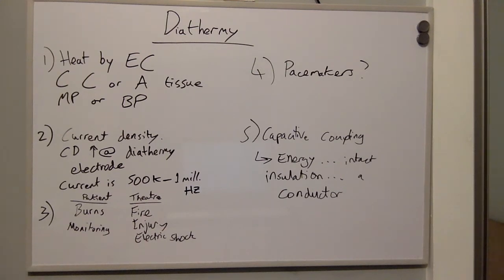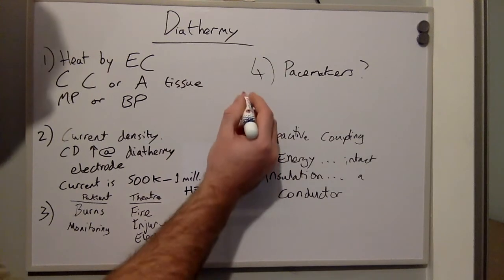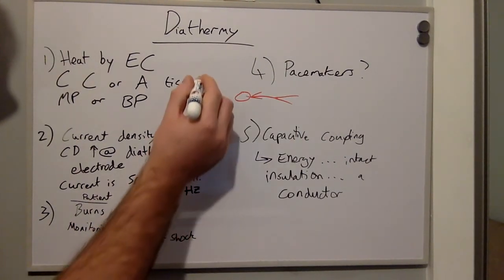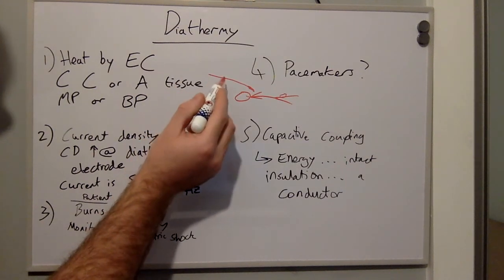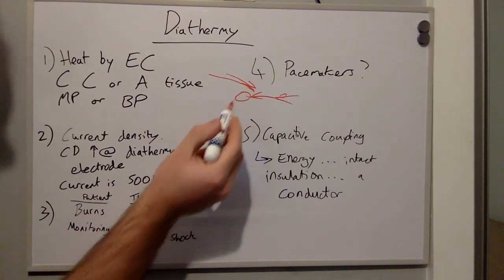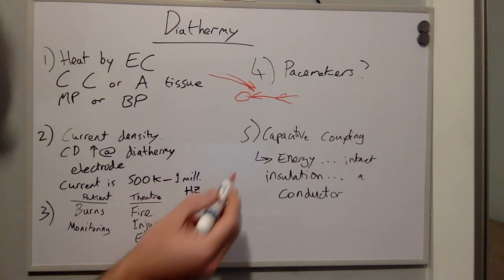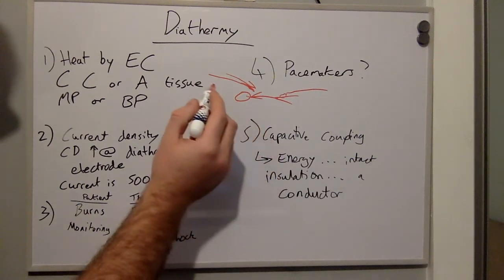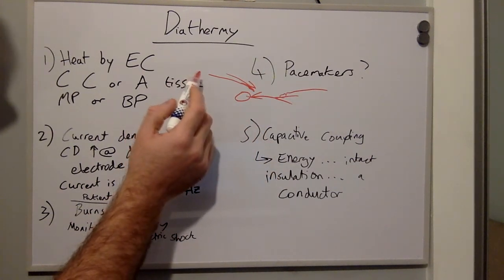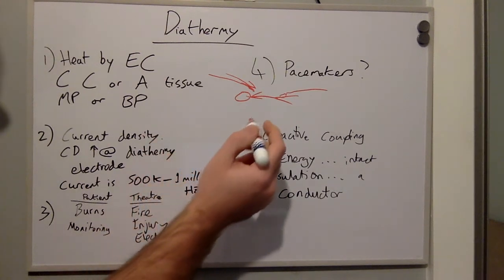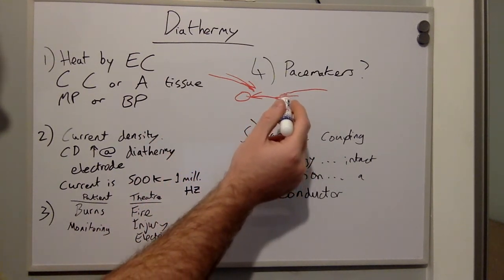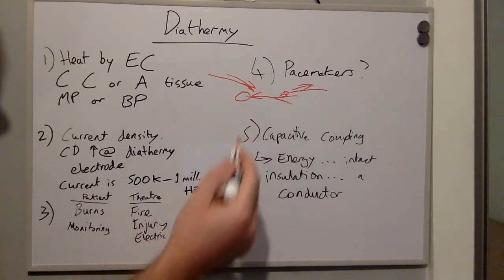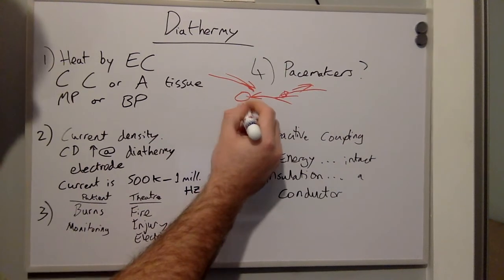With monopolar diathermy, the current travels through the diathermy to the diathermy tip. There is then a pad on the patient. The current to the patient flows through the diathermy, and the current away from the patient flows through the diathermy pad. This means that the patient is used to complete the circuit. This is monopolar.